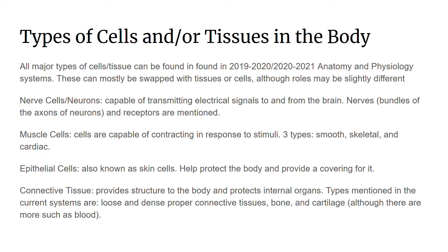Epithelial cells, also known as skin cells, help protect the body and provide a covering for it. This is also mentioned in the three systems covered by this year's anatomy. Connective tissue provides structure to the body and protects internal organs. Types mentioned in the current systems are loose and dense proper connective tissues, bone, and cartilage, although there are others. About the loose and dense proper connective tissues, there are special types of those, and some of these are mentioned in the three organ systems covered by anatomy, so be sure to search them up.